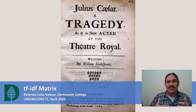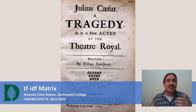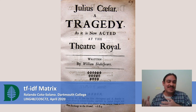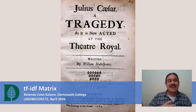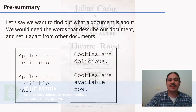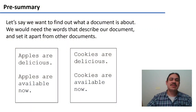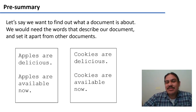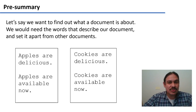This is what we'll be talking about. There's one technique to figure out which words are useful and which words are not, and it's called the TF-IDF matrix. What we want to do is try to figure out what words are necessary for us to describe what a document is about.